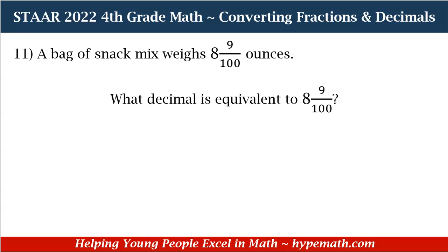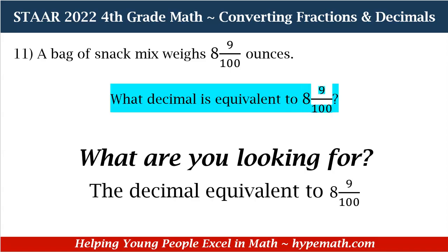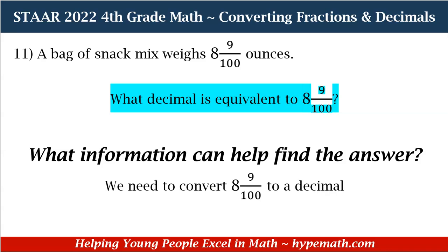Number 11 says: A bag of snack mix weighs 8 and 9 hundredths ounces. What decimal is equivalent to 8 and 9 hundredths? The first question we need to ask ourselves is, what are we looking for? We are looking for the decimal equivalent to 8 and 9 hundredths. Our second most important question is, what information can help us find the answer? The information that can help us find the answer is that we need to convert 8 and 9 hundredths to a decimal.